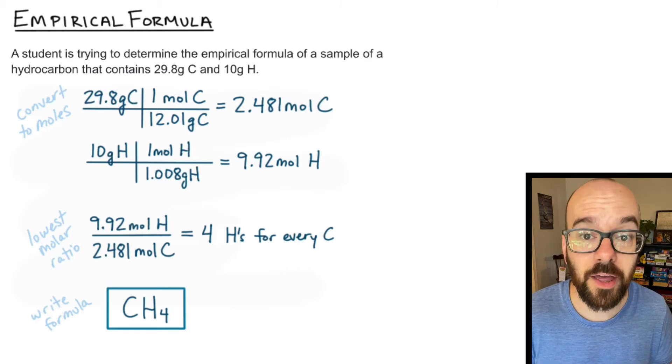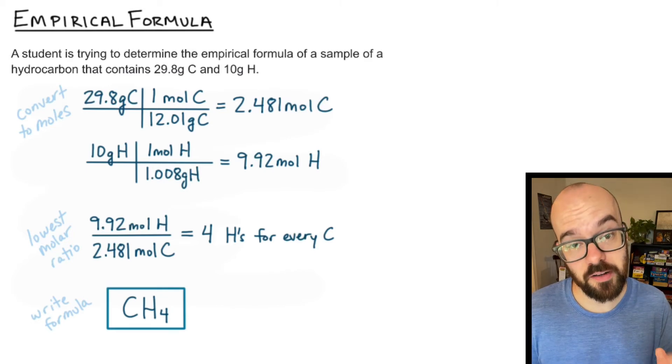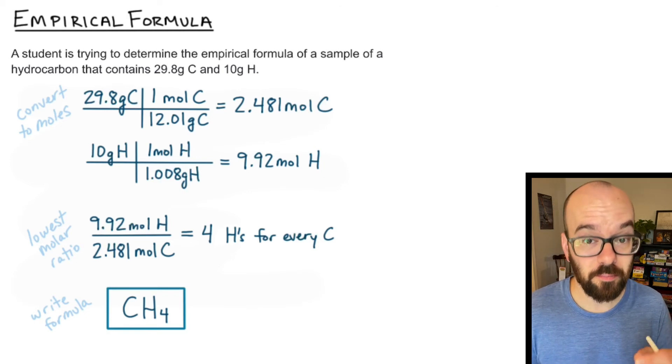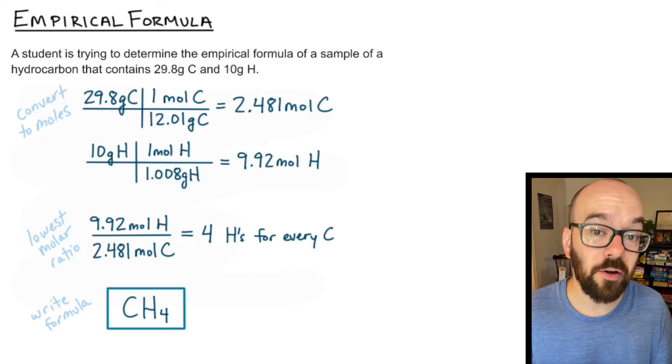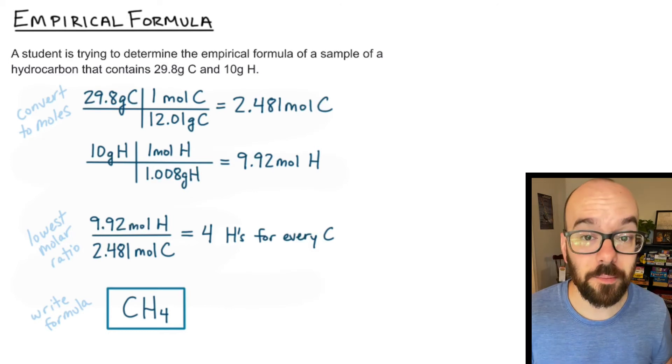I can write my empirical formula from that. If there were a third element present I would take that 2.481 moles and divide that into the number of moles of whatever that third element was and then I would add that third element to my empirical formula here.